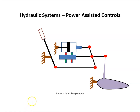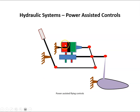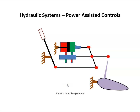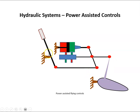The oil then comes in and acts on the actuator, forcing the flight control into this position. So you can see with this power-assisted setup, the pilot has some direct control over it, but is also assisted by some hydraulic support.